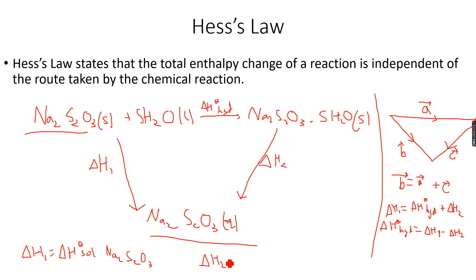And then ΔH₂ is nothing but ΔH_sol of Na₂S₂O₃·5H₂O. So now we know ΔH₁ and we know ΔH₂ - these values will be given to us, so we can do ΔH₁ minus ΔH₂ and what we will get is the enthalpy change of hydration of Na₂S₂O₃. This is basically all about Hess's Law.